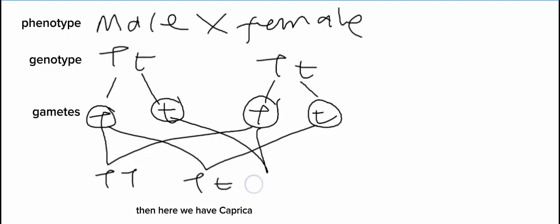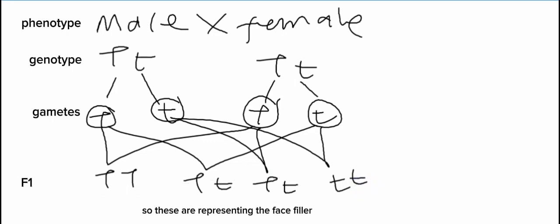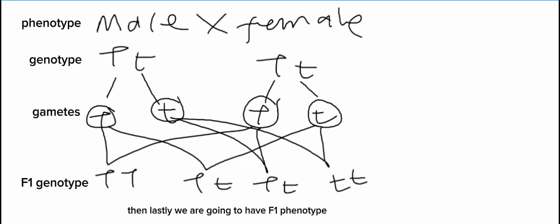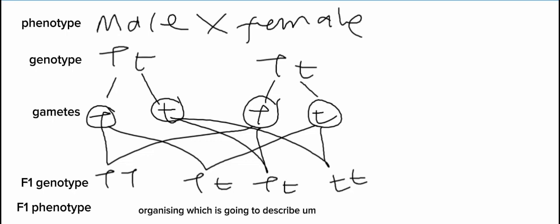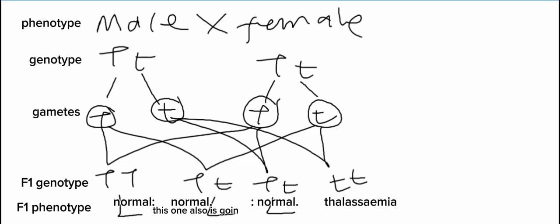The F1 genotypes produced are: capital T capital T, capital T small t, capital T small t, and small t small t. These represent the F1 genotype. Then the F1 phenotype describes the outward appearance of the offspring. The first three offspring — capital T capital T and both capital T small t — are normal. But the last one, small t small t, will have thalassemia. That is how we answer the genetics question.